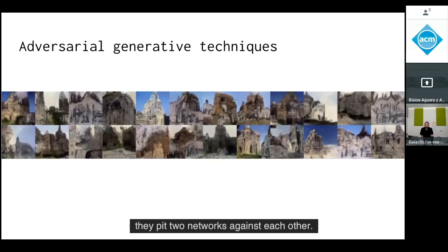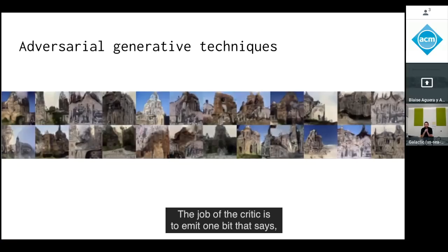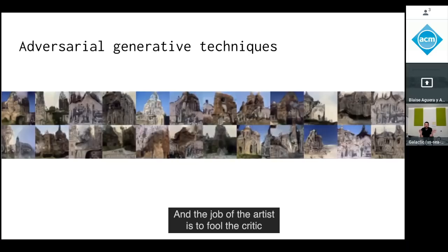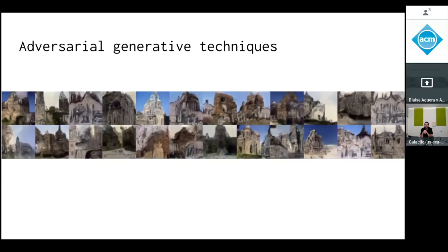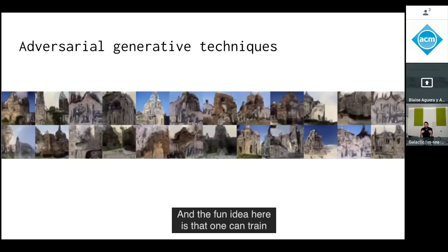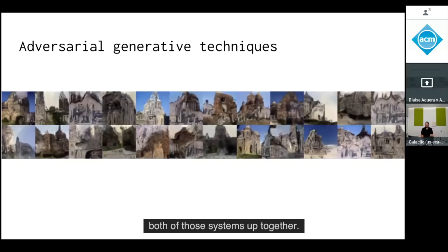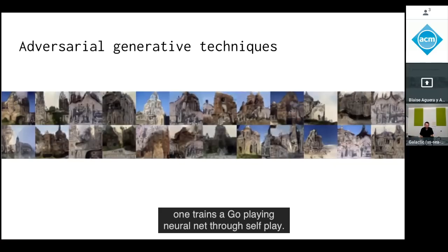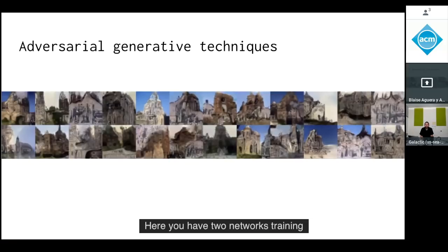There's an artist and a critic. The critic emits one bit — does it believe this is real or fake? The artist's job is to fool the critic, to have the critic perform as close to chance as possible. The fun idea is that both systems are trained together — a bit like AlphaGo Zero training through self-play. Here you have two networks training each other through self-play.